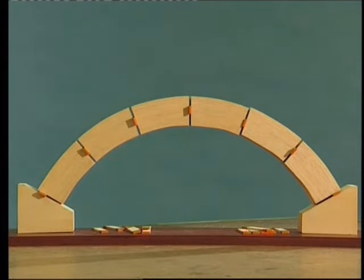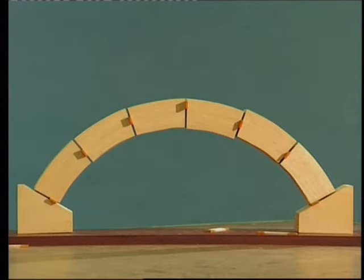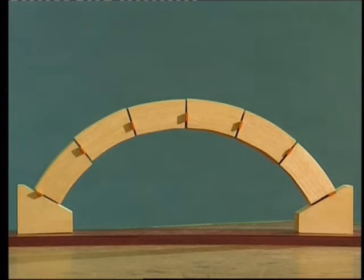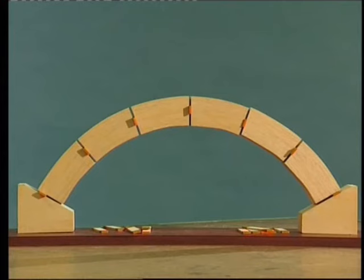This arrangement of slats represents one line of thrust. But you can have the slats in different positions, showing a different line of thrust. In fact many lines of thrust are possible within an arch, and it only takes one line to exist for the structure to stand.